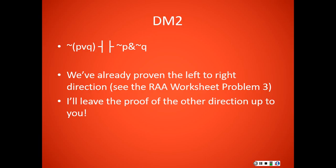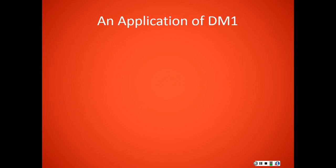So let's look at an application of the first of De Morgan's laws. So remember, it's the law that allows us to take it is not the case that P and Q and turn it into not P or not Q or vice versa. So let's try to prove it is not the case that P and turnstile P arrow Q.